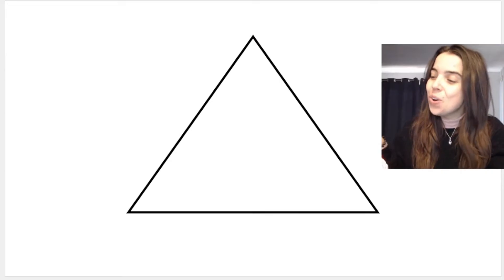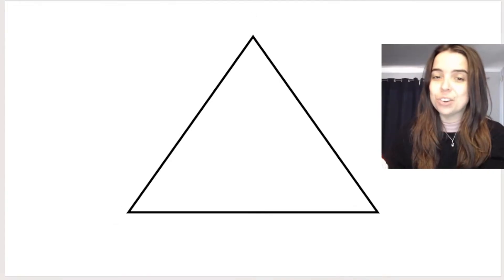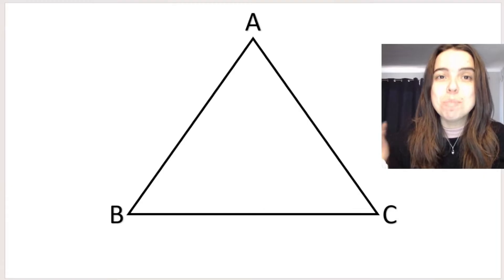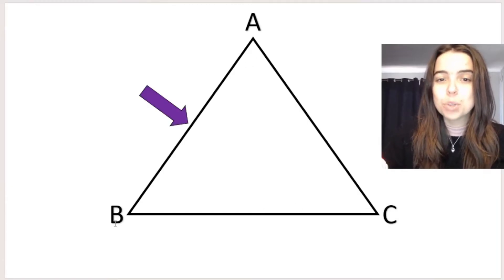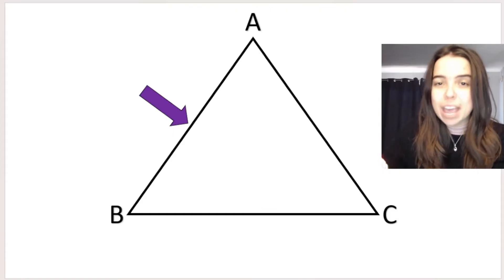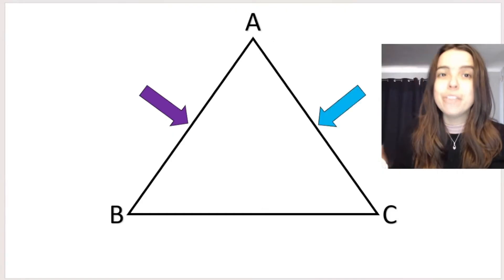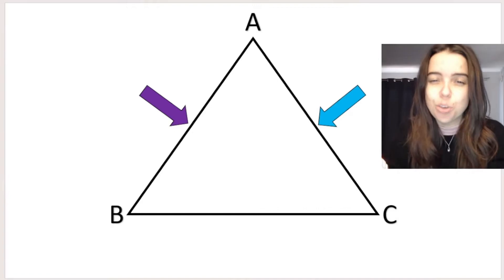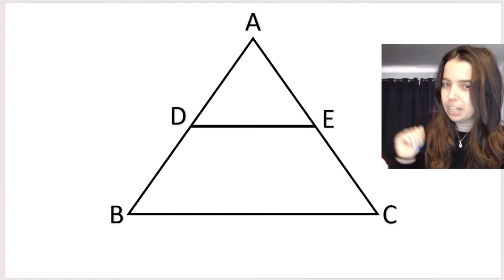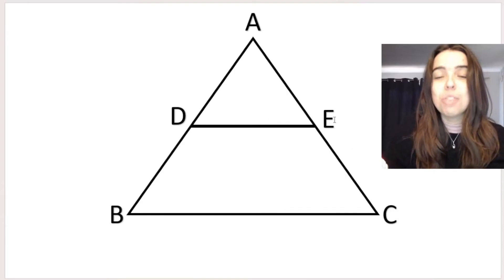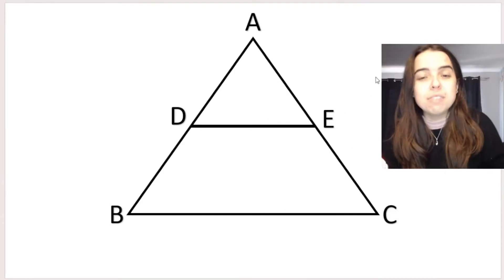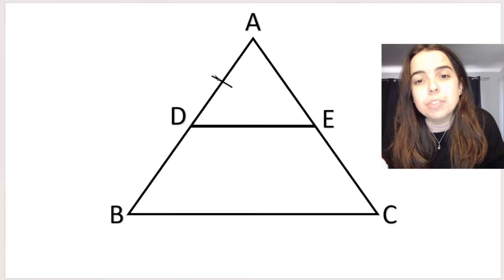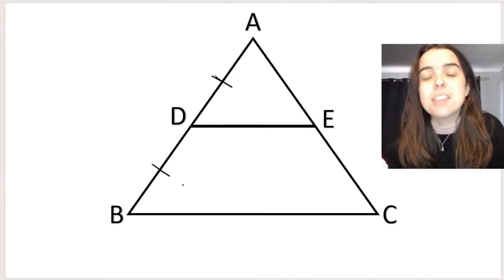Let's start off with a triangle and we're going to call this triangle ABC. Now if I take this triangle and I locate the midpoint of line AB, which would be somewhere around there, and then I locate the midpoint of line AC, which is somewhere over there, and then I take a line and join or connect those midpoints. Let's call that midpoint D and let's call that midpoint E. What I've done is located D as the midpoint of AB, which means that AD, this length over there, is equal to DB, that length over there.